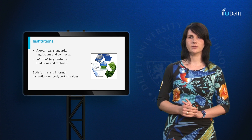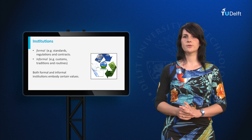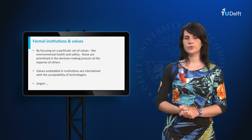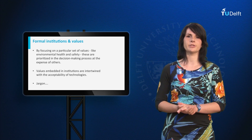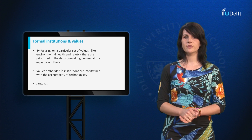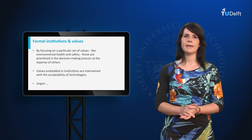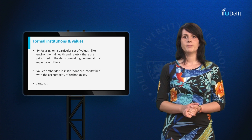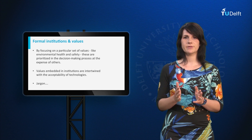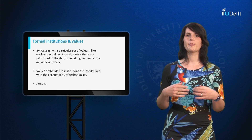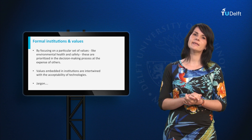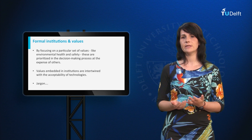Both formal and informal institutions embody certain values. This is most obvious for formal institutions. For example, law prescribes project developers to conduct an environmental impact assessment of their planned project, which should safeguard the value of environmental health and safety. It is interesting to note that in controversies, institutions such as an environmental impact assessment often become contested themselves. People for instance don't agree with the scope of the assessment. By focusing on a particular set of values — environmental health and safety in this case — these are prioritized in the decision-making process at the expense of others. This shows how values embedded in institutions are intertwined with the acceptability of technologies.